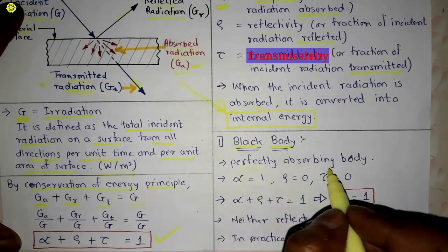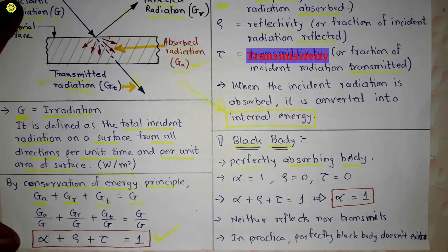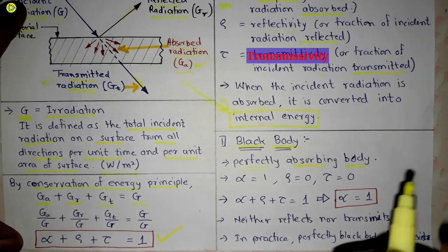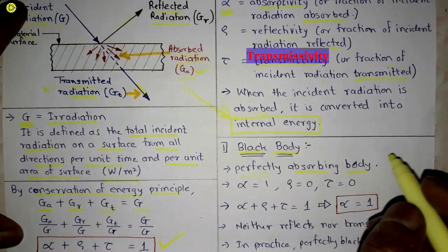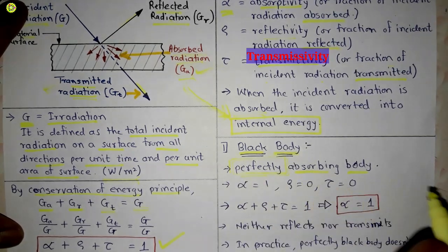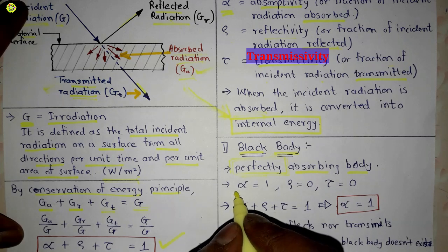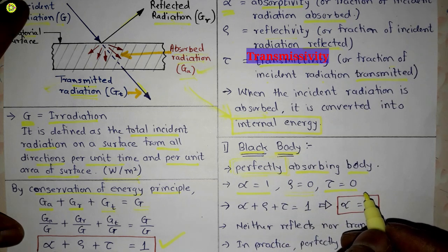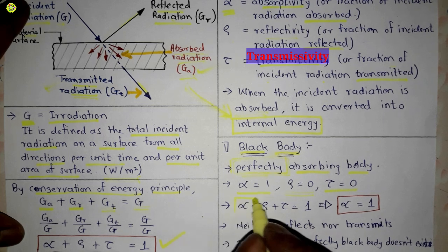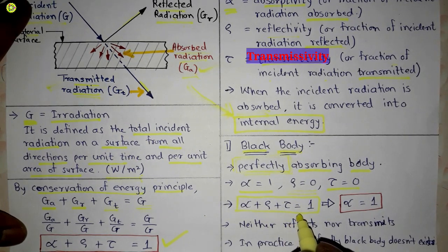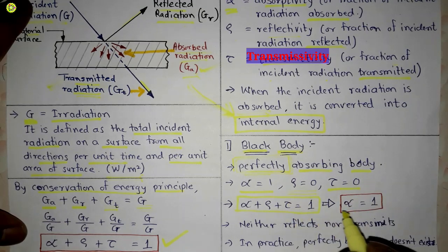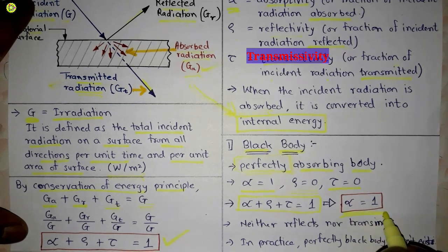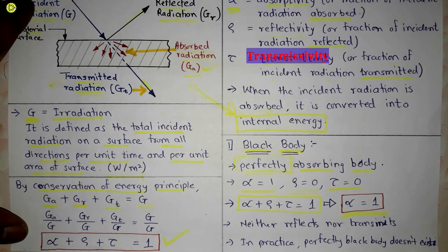A black body is a perfectly absorbing body — it neither reflects nor transmits incident radiation; it absorbs all incident radiation. For a black body: α = 1, ρ = 0, τ = 0. Putting these values into α + ρ + τ = 1, we get α = 1. In practice, a perfectly black body does not exist.